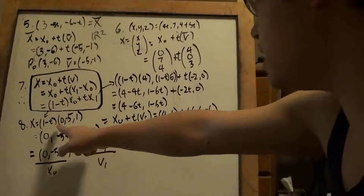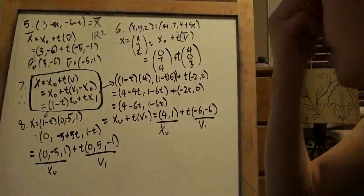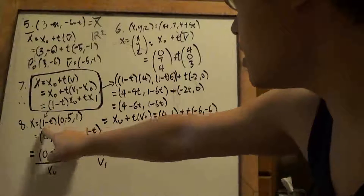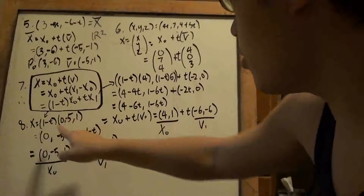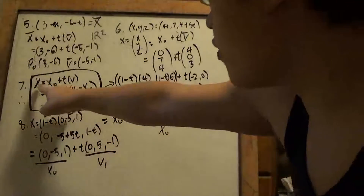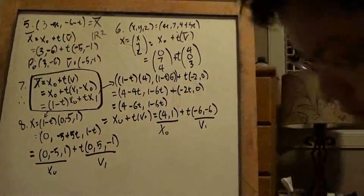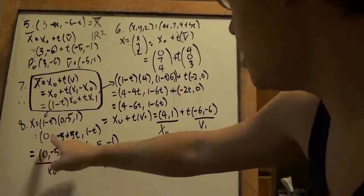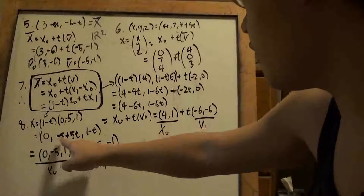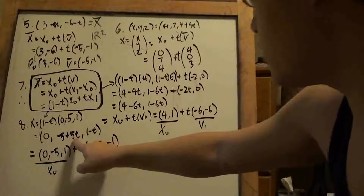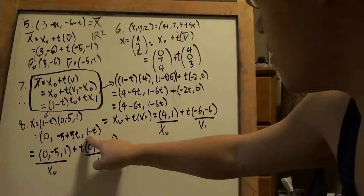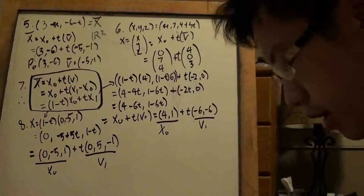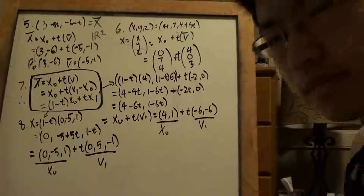Number 8 is essentially the same idea but with a 3-dimensional vector. Same process: 0 times anything is 0, negative 5 times that gives me that, 1 times that gives me the same thing. Once I have the new vector X and pull this apart: 0 is a number so it's a point; negative 5 plus 5t — negative 5 is the point, 5t goes to the vector; 1 minus t — 1 is the point, negative t gives negative 1 for the vector.